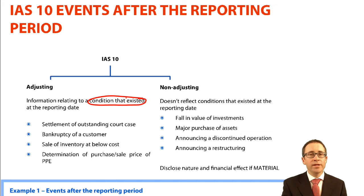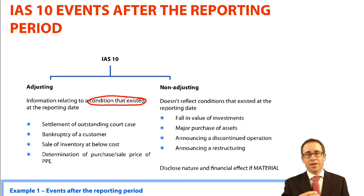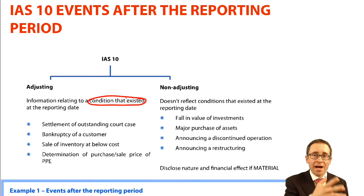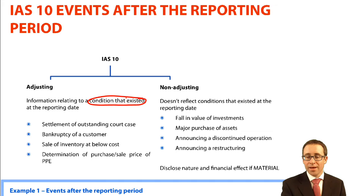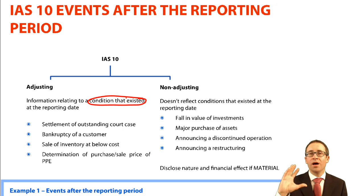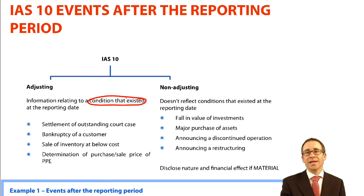If you announce a discontinued operation, it's only when you announce it that the obligation arises — as you see in IAS 37, that creates the obligation. At the end of the year there was no obligation, so there was no condition. The obligation has arisen after the reporting date, so no adjustment. Similarly, with a restructuring, there's no obligation to restructure until you actually announce it, so don't make any adjustments. Therefore you just have a non-adjusting event — the condition did not exist at the reporting date.